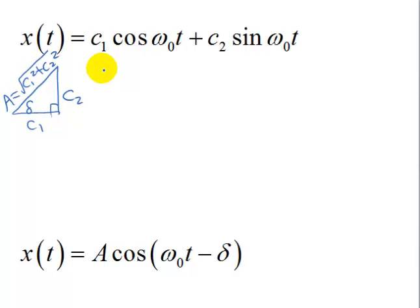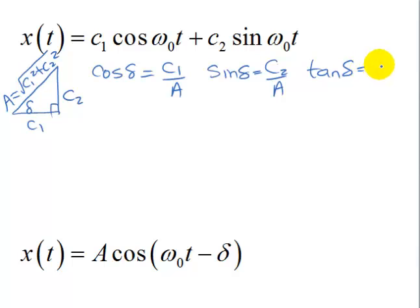Now let's write some trig functions from this triangle. Cosine of delta is adjacent over hypotenuse. Sine of delta is opposite over hypotenuse. And tangent of delta is opposite over adjacent. Now let's multiply both sides of this one by A and do the same thing here.